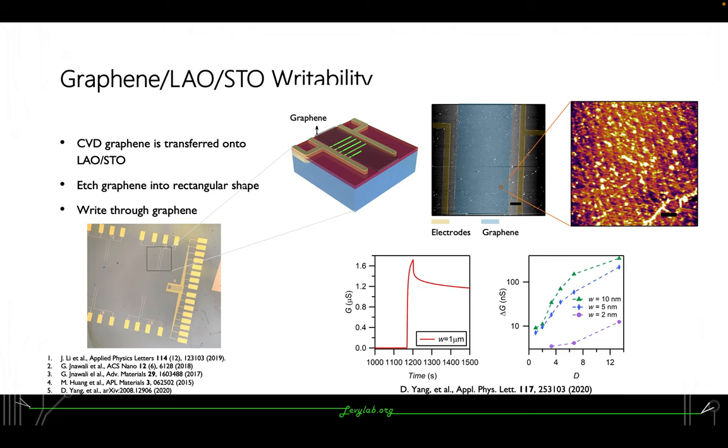Here we transferred a CVD-grown graphene on top of LAO/STO and etched it into this rectangle shape. After that, I exposed a tunnel wire connecting the electrodes at both sides of this graphene piece. We can see a clear conductance jump from this connecting writing process.